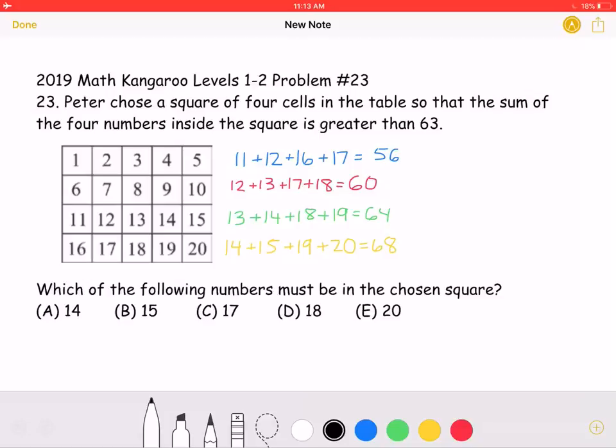Peter chose a square of four cells in the table so that the sum of the four numbers inside the square is greater than 63. Which of the following numbers must be in the chosen square?